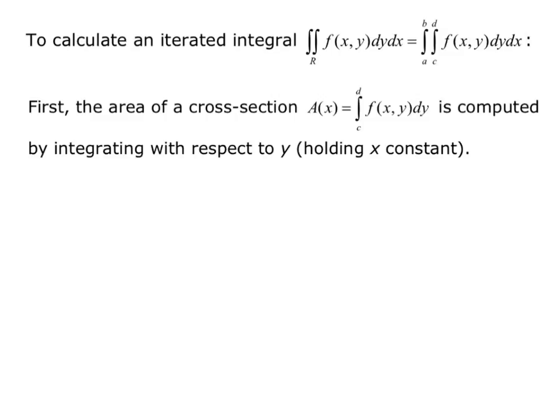First, the area of a cross section, A(x), equals the integral from c to d of f(x,y) dy, computed by integrating with respect to y while holding x constant. Just like with partial derivatives, we hold the other variable as a constant and integrate with respect to the variable listed in the dy or dx part.